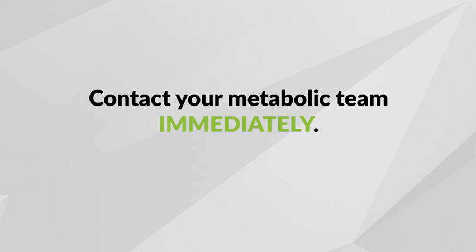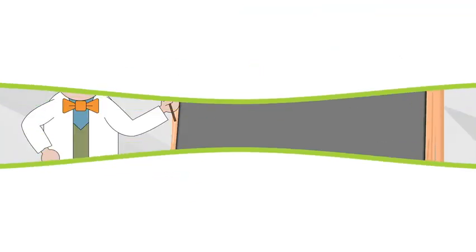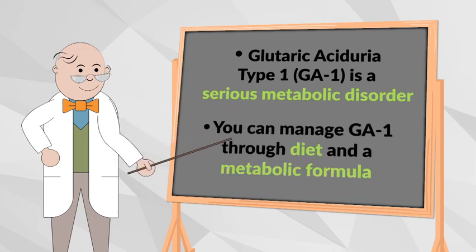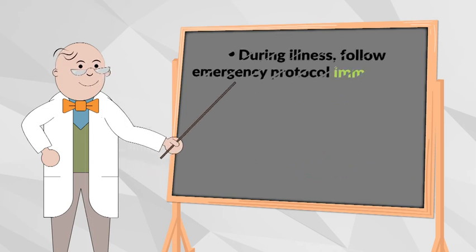To review, GA1 is a serious, inherited metabolic disorder that can lead to severe, sometimes irreversible problems. You can manage GA1 with a protein-restricted diet and a special metabolic formula and carnitine. When your child is ill or not behaving as usual, it is imperative to contact your metabolic team immediately to prevent a metabolic crisis.